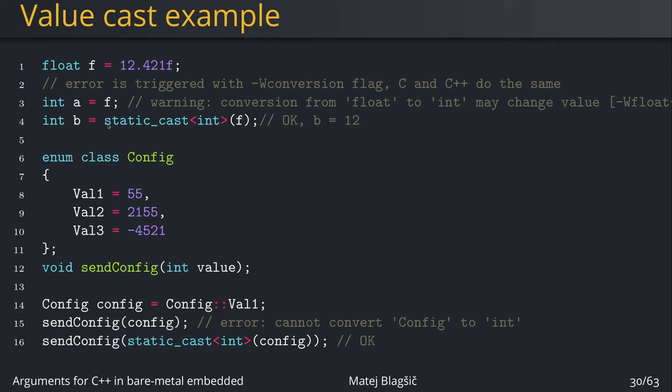In C++ we use the static_cast. In this case, we're converting from float to an int. Now the second example is using an enum class, and if you remember from the previous videos, the enum is just an integer disguised in a type, and the enum class in C++ prevents enums from being implicitly converted to int.